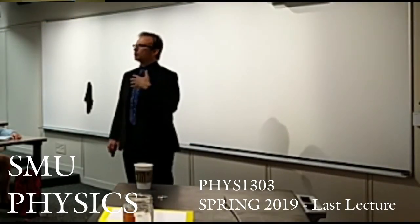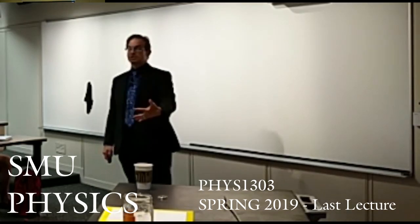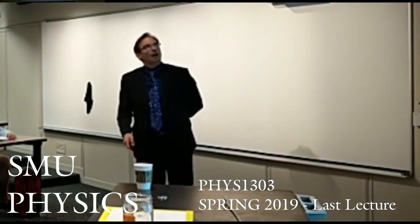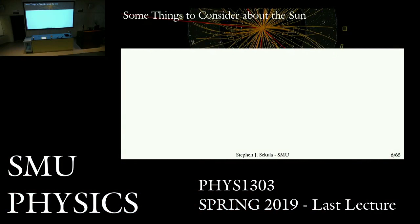We can take a look at the sun as a laboratory for understanding other stars, although most other stars in the universe are very unlike our sun. Here are some basic numbers. The mass of the sun is absolutely huge. The Earth is about 10 to the 24 kilograms; the sun is 10 to the 30 kilograms. If you were to take the whole solar system and weigh it, the mass of the sun is 99.999-something percent of the entire solar system. It outweighs everything else combined by a huge amount.